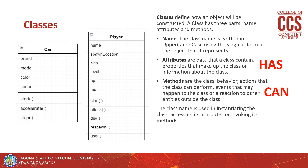Here we have another class called player. The player has attributes and methods. The player has name, spawn location, skin, level, HP, and MP. The player can start, attack, die, respawn, and use whatever object — like a weapon, maybe.